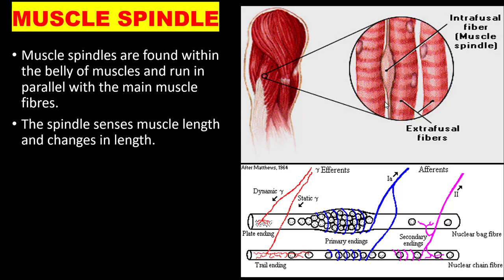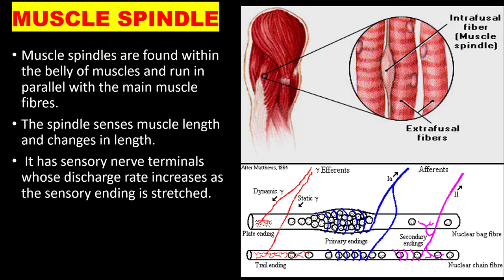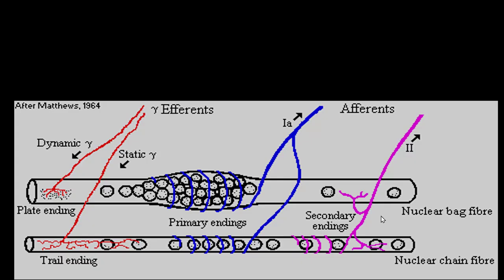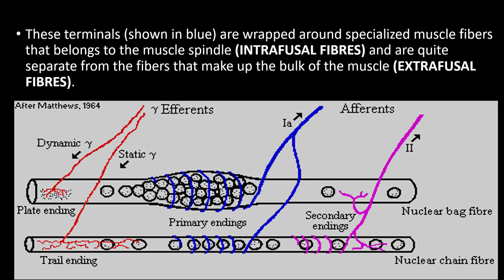The spindle senses muscle length and changes in length. It has sensory nerve terminals whose discharge rate increases as the sensory ending is stretched. This nerve terminal is known as the annulospiral ending, named because it is composed of rings in a spiral configuration. The sensory nerves spirally wrap around the muscle fibers. These terminals wrap around specialized intrafusal muscle fibers and are separate from the extrafusal fibers that make up the bulk of the muscle.